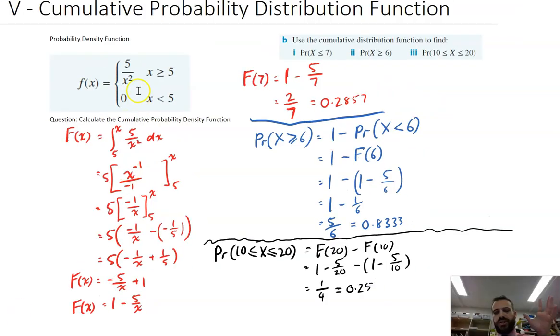All right, pretty useful. The cumulative probability distribution function, you integrate once, and then you have this nice, neat little thing you can just sub values in, and it'll spit out probabilities on the other side.